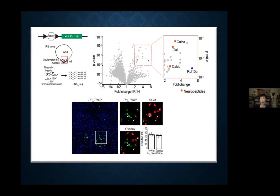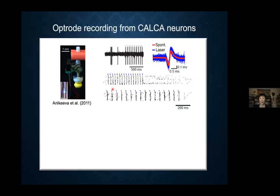To target the calca neurons, we used a calca-Cre mouse line generated by Richard Palmiter's lab. We wanted to make sure these neurons are really sleep-active because CFOS is not a perfect indicator of activity. So we used optrode recording, tagging these calca neurons with channelrhodopsin by injecting a Cre-inducible virus into the calca-Cre mice. Using an optrode with an optic fiber surrounded by several bundles of wires, every time we turn on the laser, it evokes a spike reliably at a very short latency — confirming this is a channelrhodopsin-expressing calca cell.